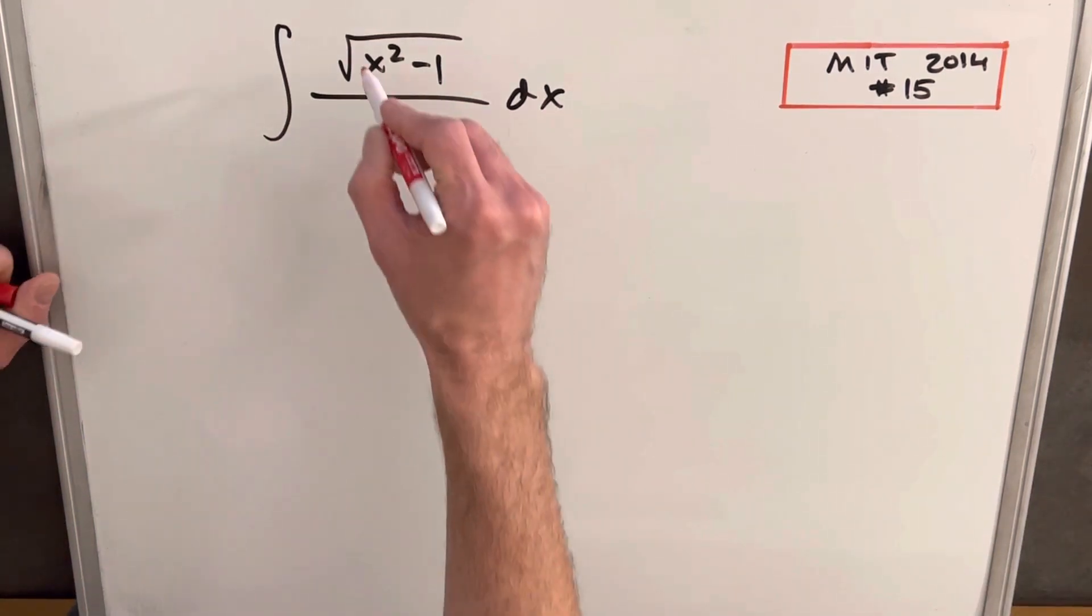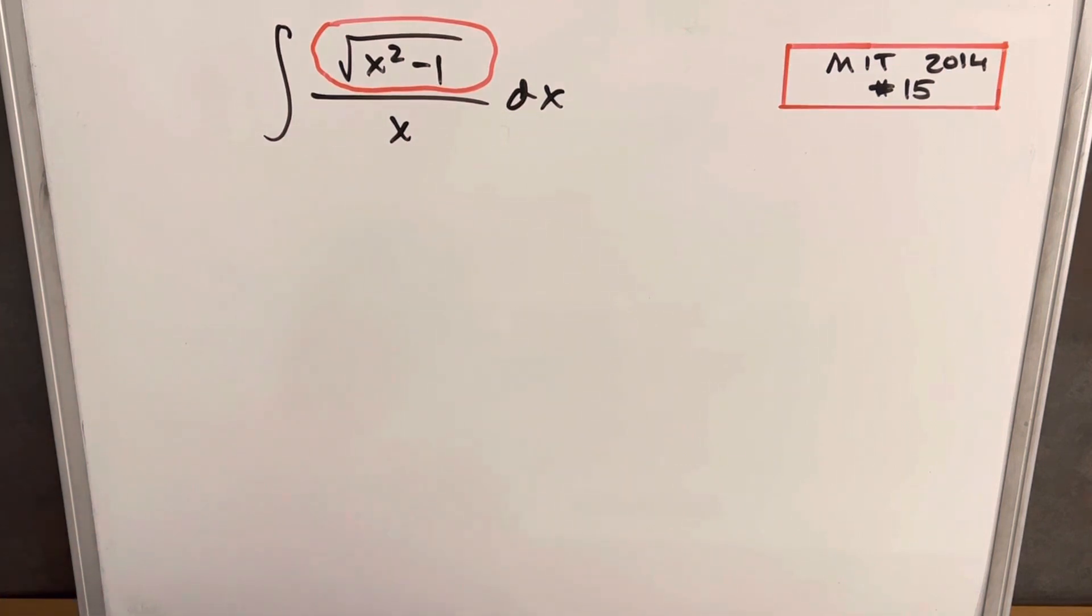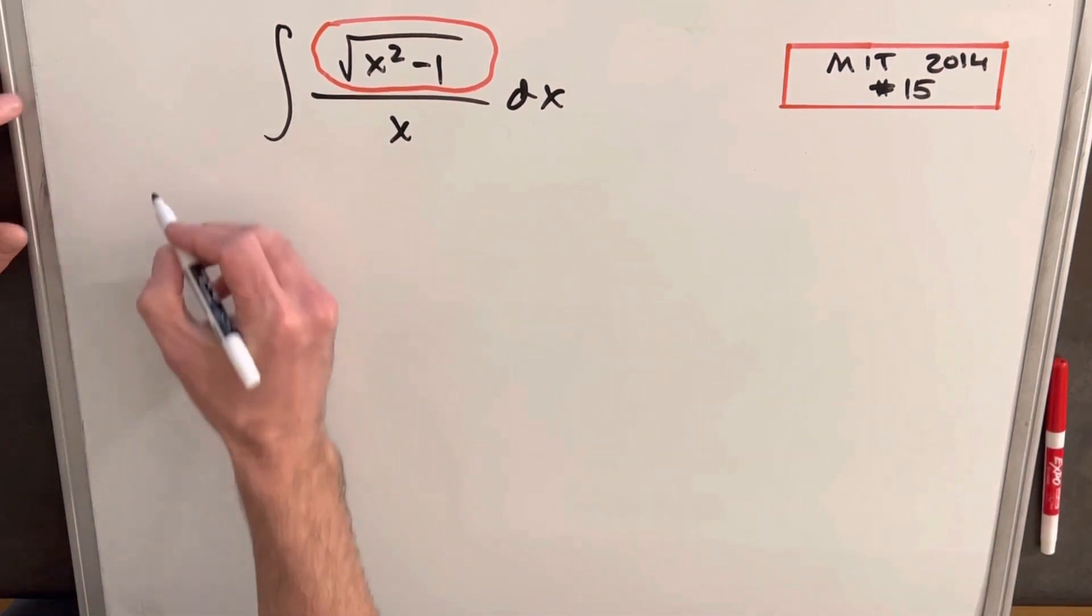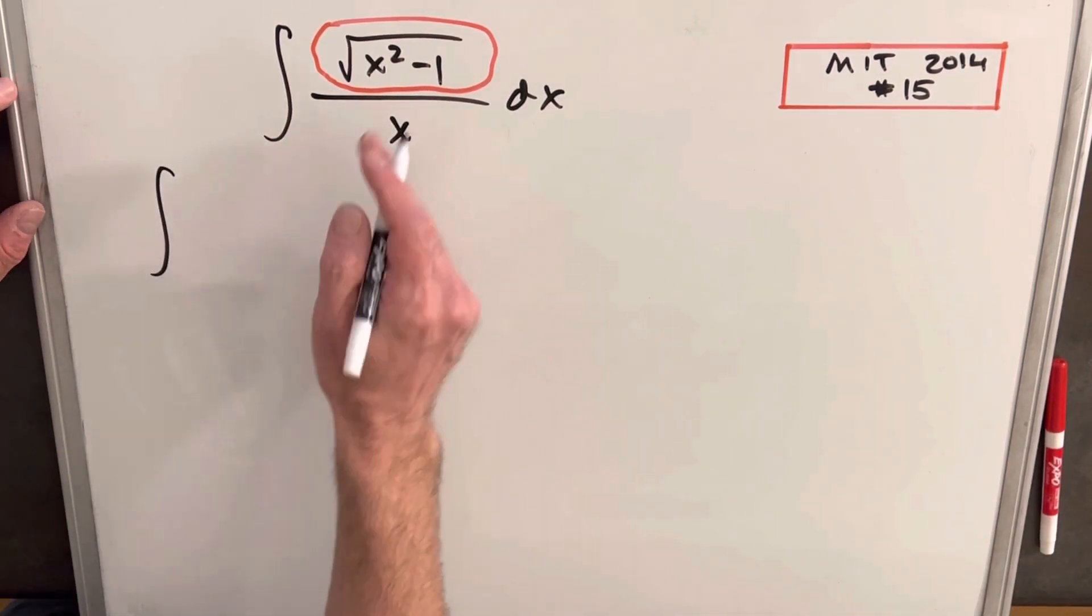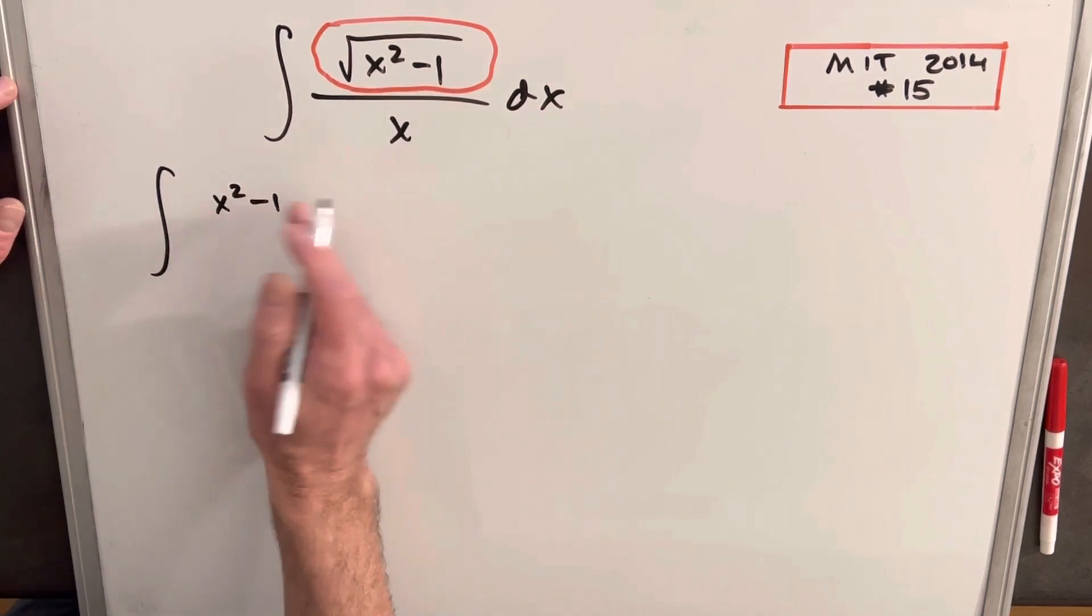What I wanted to do is focus in on this numerator and see if we can do something with this, manipulating it algebraically. So let's rewrite this. Instead of writing this as a square root, I'm going to write it as x squared minus 1 to the half power.